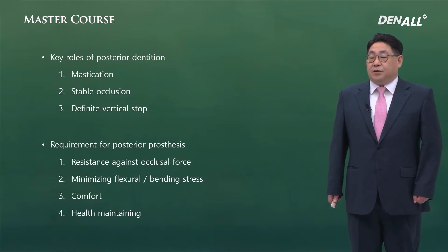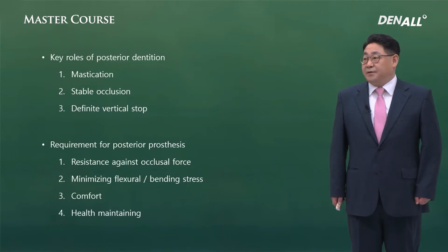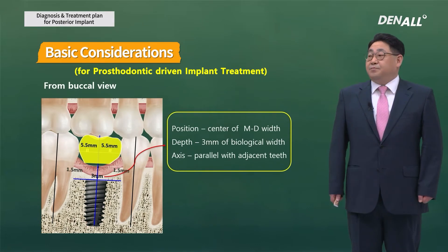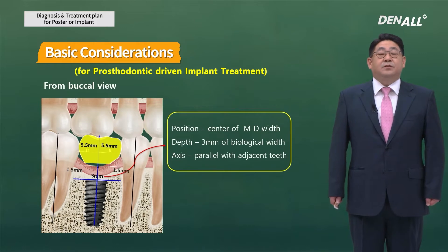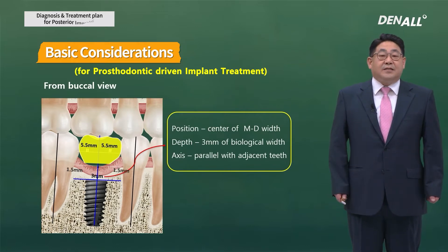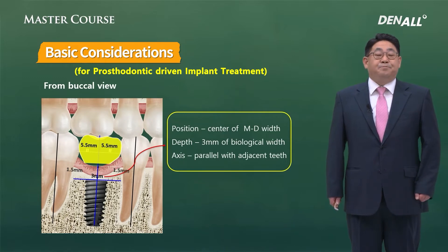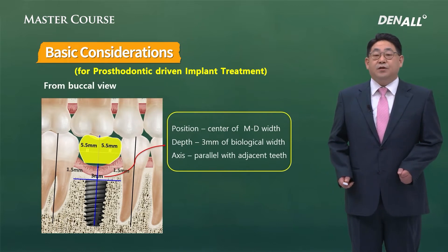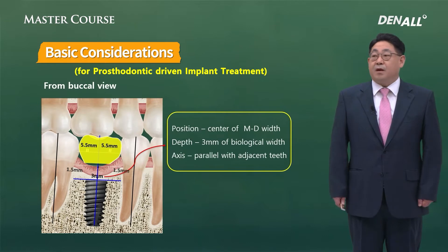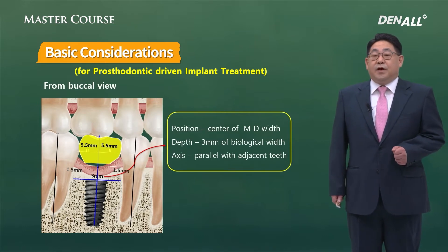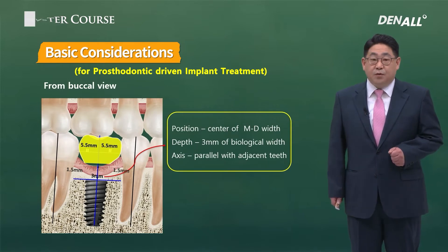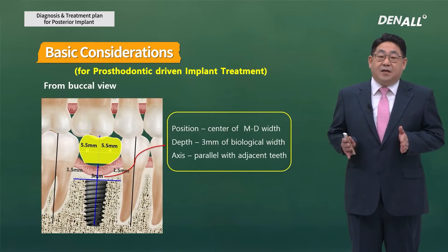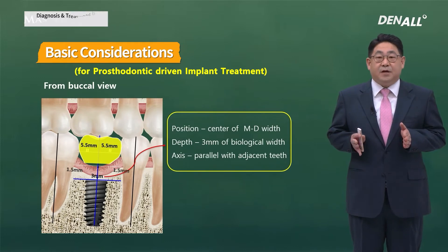Now I'm going to talk about where the implant should be placed. In order for an implant to function ideally for a long time and minimize complications, ideal placement is imperative. From the buccal view, the implant needs to be placed in the middle of the mesiodistal width, and it should be parallel with the axis of adjacent teeth. If the axes differ, it needs to be parallel with the compromised axis.